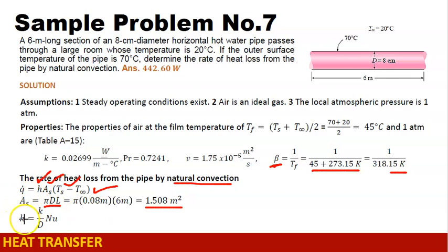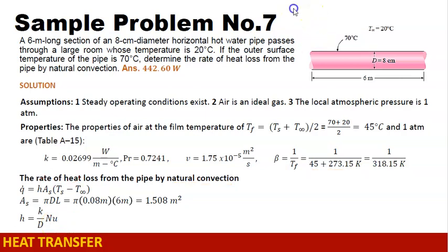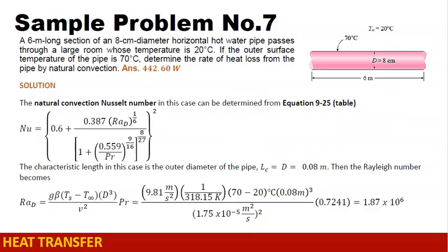Solving for H: the convection coefficient H can be solved using the Nusselt number, where H equals K over D times the Nusselt number. We need to solve for the Nusselt number first to get H, then substitute all values into the equation for Q to get the rate of heat loss. Since the geometry is a horizontal cylindrical pipe, we identify the appropriate correlation.